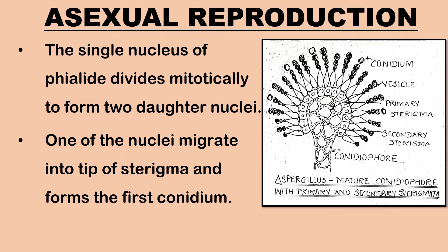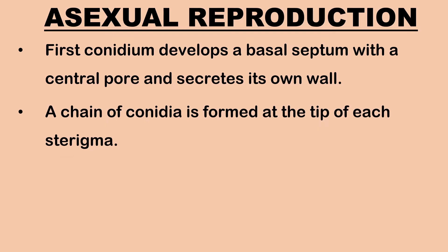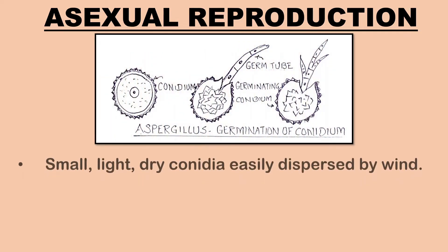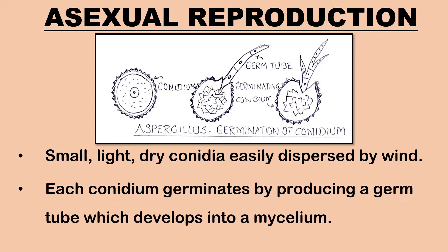At the time of formation of the first conidium, the phialide elongates at the tip to form a tube. The sterigmata or phialides are uninucleate. The single nucleus of the phialide divides mitotically to form two daughter nuclei; one of them migrates into the tip of the sterigma. The tip grows in size and forms the first conidium, which develops a basal septum with a central pore and secretes a wall of its own. This series of events is repeated and a chain of conidia is formed at the tip of each sterigma, arranged in basipetal succession with the youngest conidium at the base and the oldest at the top. The conidia are very small, light, and dry, and are easily dispersed by wind.